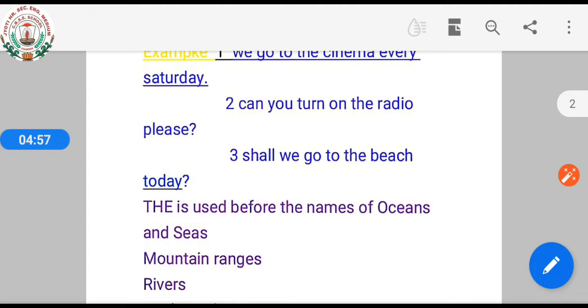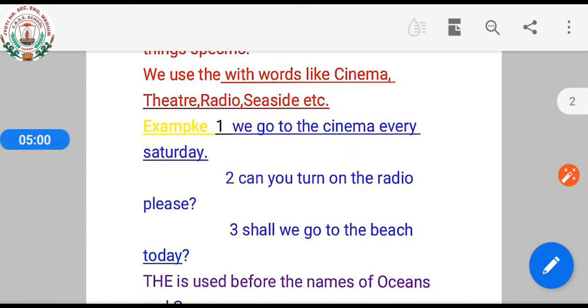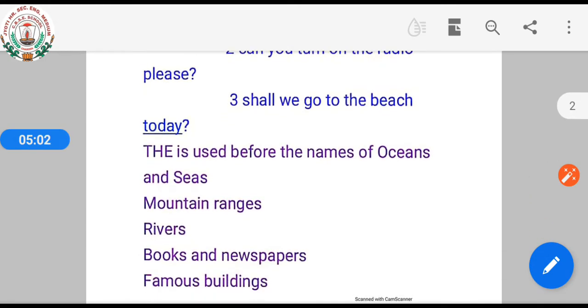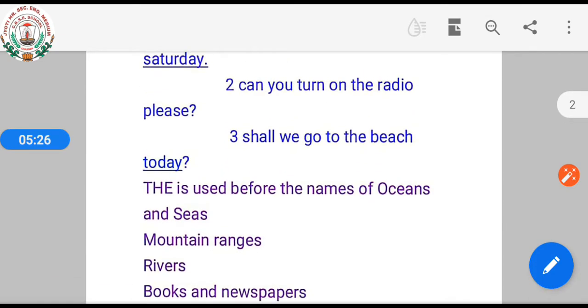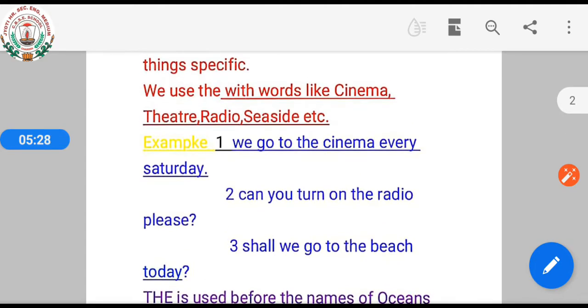'The' is used before the following: mountain ranges, rivers, books and newspapers, famous buildings, gulfs, canals, ranges - mountains but not a single mountain. The Red Sea, the Ganges, the Persian Gulf, the Bay of Bengal. So here we have to use 'the'.